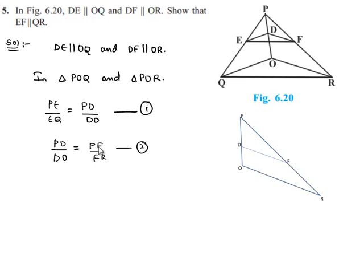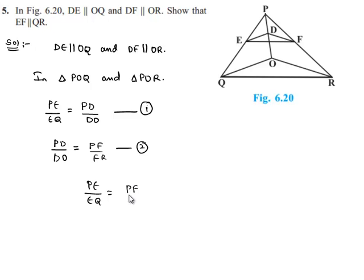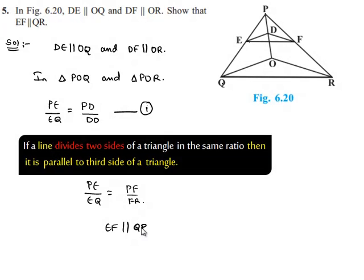Since PD by DO is equal to PF by FR, substituting into equation 1, we get PE by EQ is equal to PF by FR. It is clear that the proportion of PE to EQ is equal to the proportion of PF to FR in triangle PQR. Therefore, from the converse of the Basic Proportionality Theorem, we can conclude that EF is parallel to QR.